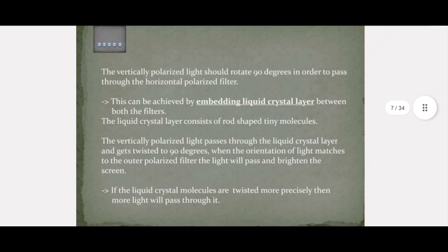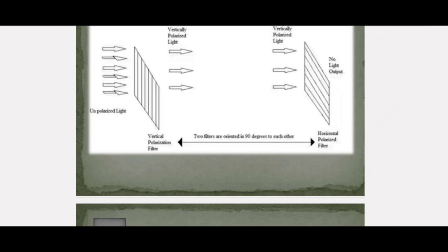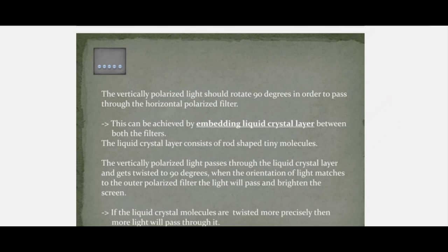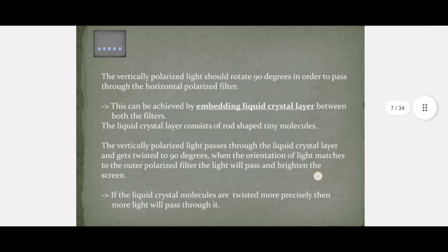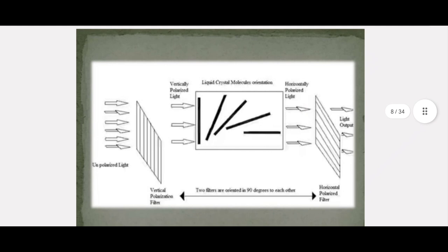The vertically polarized light should rotate 90 degrees in order to pass through the horizontal polarized filter. This can be achieved by embedding a liquid crystal layer between both filters. This liquid crystal layer consists of rod-shaped tiny molecules. The vertically polarized light passes through this liquid crystal layer and gets twisted to 90 degrees. If the liquid crystal molecules are twisted more precisely, then more light will pass through it, changing vertically polarized light to horizontally polarized light.